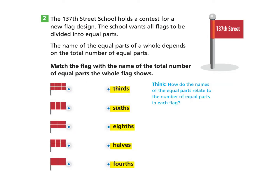Let's look at the next page, page 355, Part 2. The 137th Street School holds a contest for a new flag design. The school wants all flags to be divided into equal parts. The name of the equal parts of a whole depends on the total number of equal parts. Match the flag with the name of the total number of equal parts the whole flag shows. How do the names of the equal parts relate to the number of equal parts in each flag?